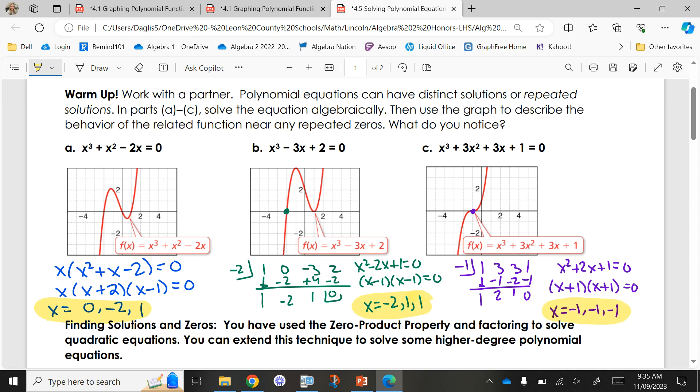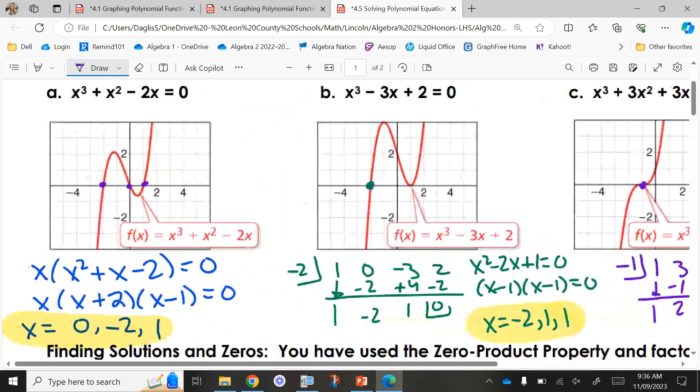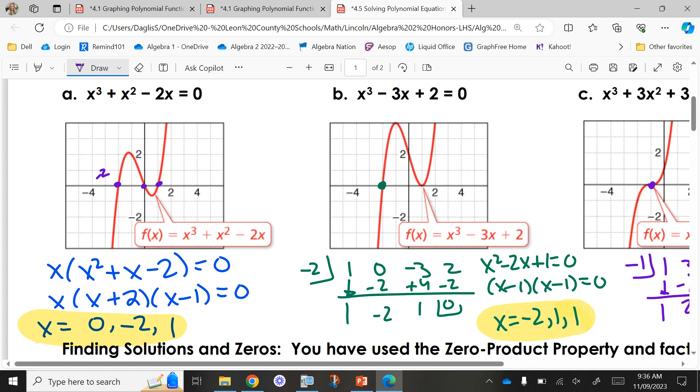They all have three answers. All of my functions are a degree of three. Part A, how many x-intercepts do you have? We have three separate x-intercepts, and I have three separate x-values: zero, negative two, one. Do those match up? Yes. Here's my negative two, there's my zero, there's my one.